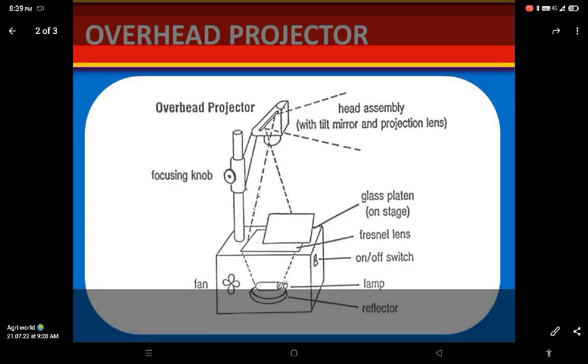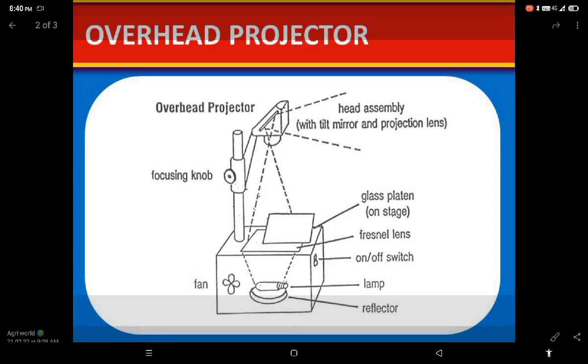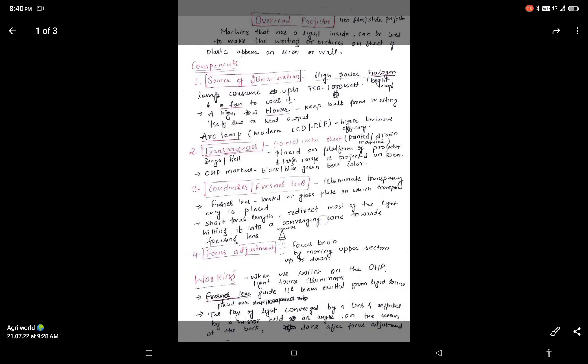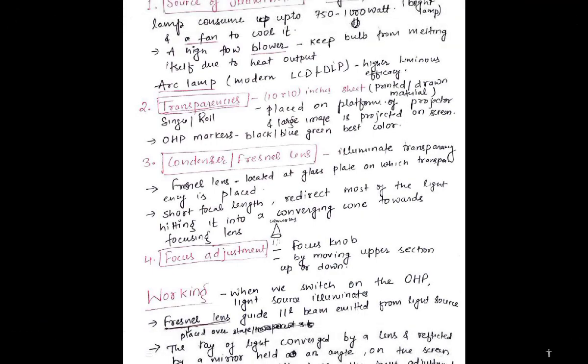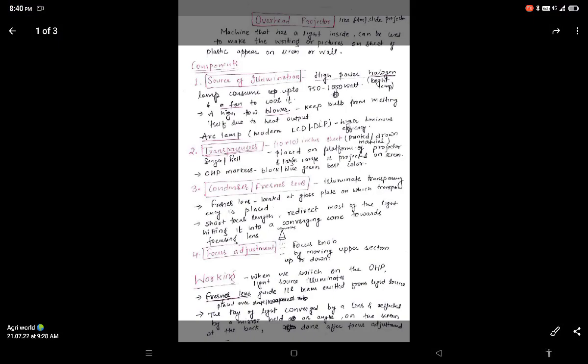This is focusing knob. So turning the adjustment wheel moves the lamp to correct focal length and restores the white projected image. So I have told the working earlier.